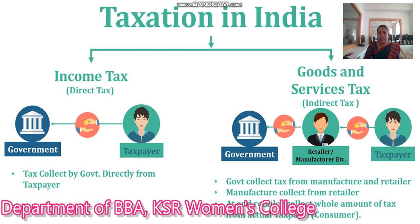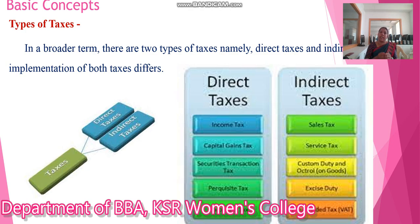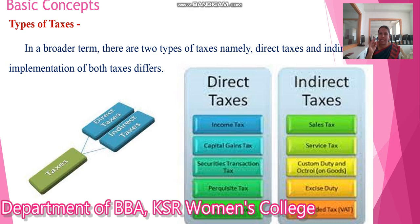Taxation in India — there are two types of tax: the first is income tax, called a direct tax; the second is goods and services tax, which is an indirect tax. In broader terms, there are two types: direct tax and indirect tax. Under direct tax: income tax, capital gains tax, securities transaction tax, purchase tax, and corporate tax.